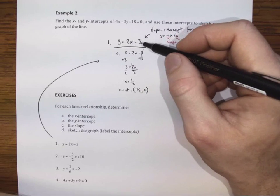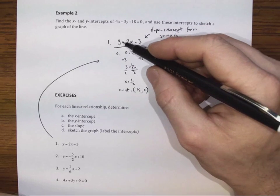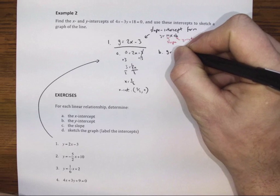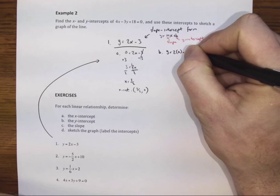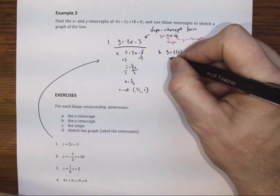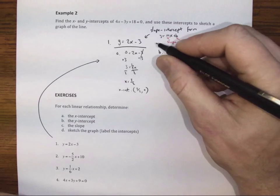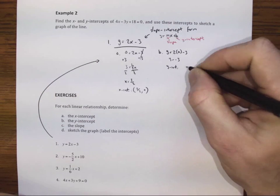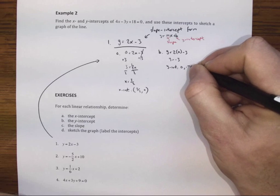In the case that maybe we don't have y isolated, we just want to quickly find the y-intercept, all we have to do is plug 0 for x. So that means y is equal to 2 times 0, take away 3. Or rather, y is equal to negative 3, which is what we were saying before, right? So that means our y-intercept is at 0, negative 3.